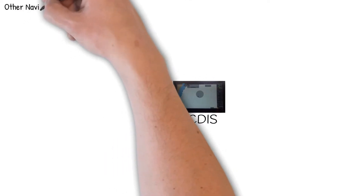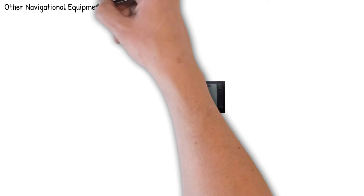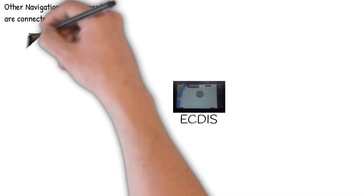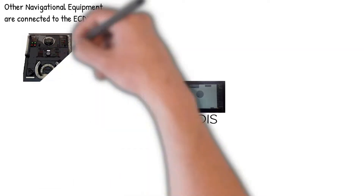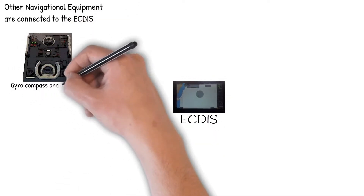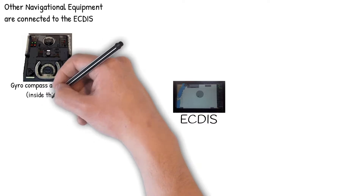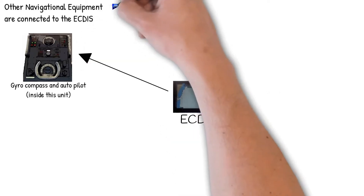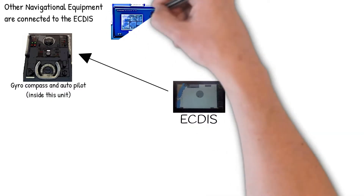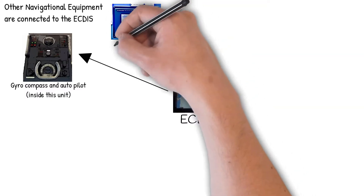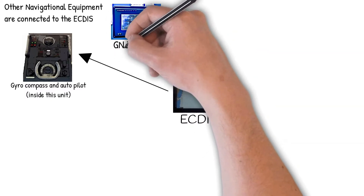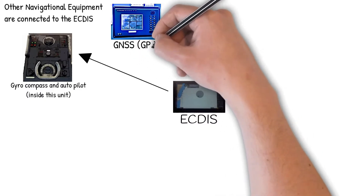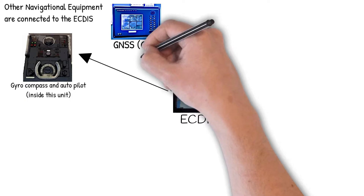Other navigational equipment are connected to the ECTIS. Gyrocompass and Autopilot are inside this unit. GNSS, or Global Navigation Satellite System — GPS, Global Positioning System, is an example.